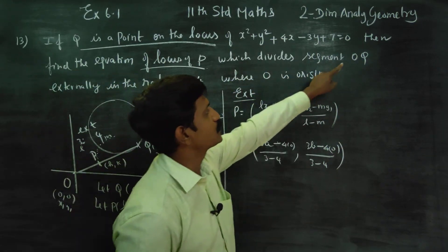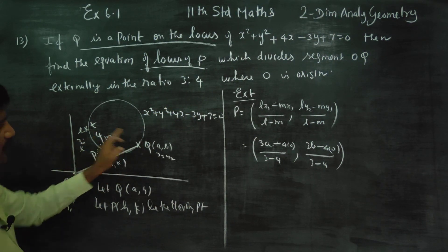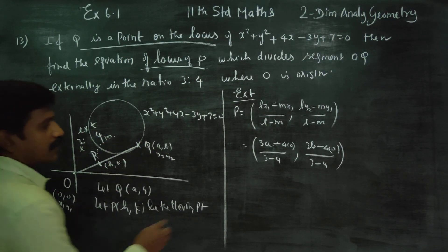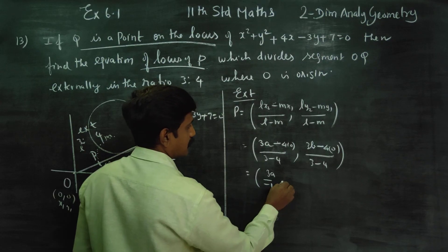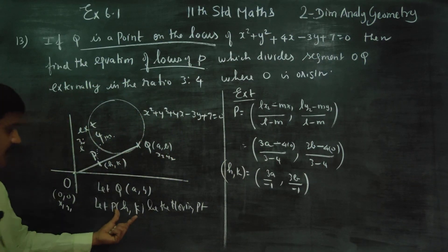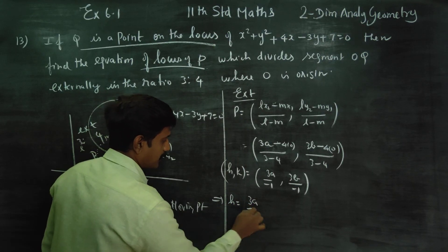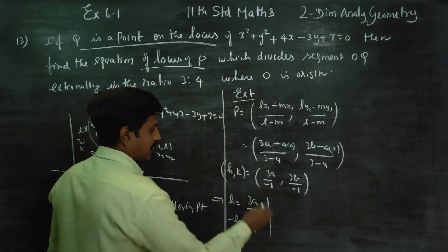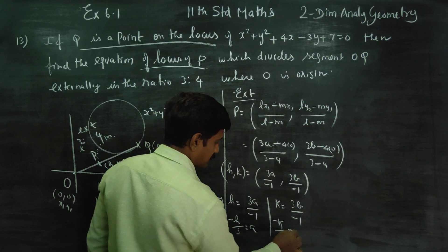So h is equal to 3a by minus 1. Cross multiply: minus h by 3 is equal to a. k is equal to 3b by minus 1. Cross multiply: minus k by 3 is equal to b. So a and b values are ready in terms of h and k.